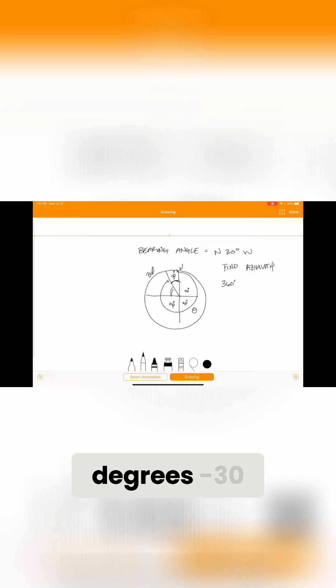We're going to have 360 degrees minus 30 degrees equals 330 degrees, and that's going to be your azimuth angle.